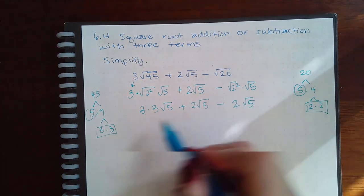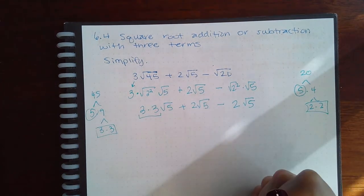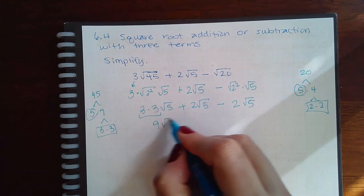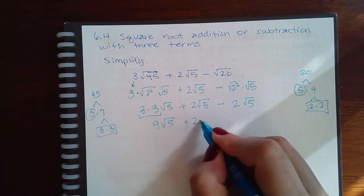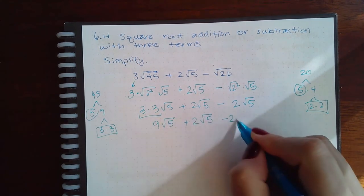So before I can combine them, I do have to actually multiply those together. So I get 9 square root of 5 plus 2 square root of 5 minus 2 square root of 5.